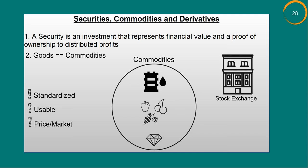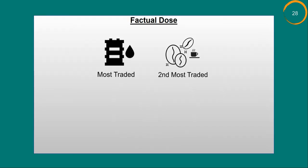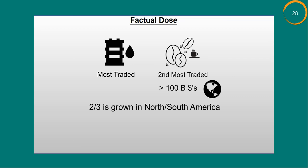Did you know coffee — the primary source of caffeine in the world — is the second most traded commodity after crude oil? The coffee market is estimated to be worth over 100 billion dollars worldwide. Two-thirds of the world's coffee is grown in North America or South America, 90% of which is in developing countries like Brazil and Colombia. Brazil, Vietnam, and Colombia are the top three producers of coffee.